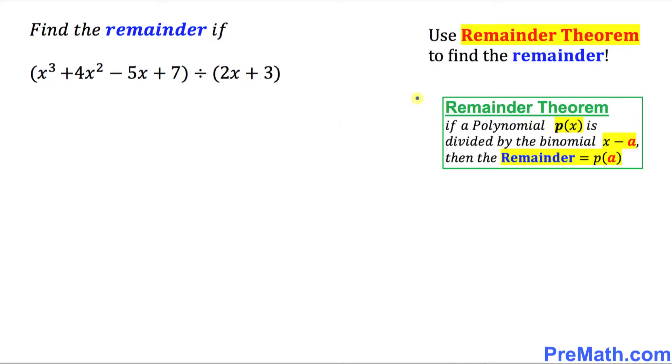The easiest possible method to find the remainder is called remainder theorem. Here is the definition: If a polynomial P(x) is divided by the binomial x minus a, then the remainder must be equal to P(a).